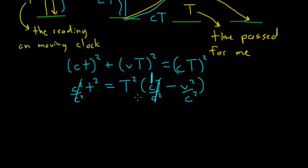So, if we want to solve for capital T, all we're going to get is capital T equals little t over the square root of 1 minus V² over C². And, that is the special relativity formula for time dilation.